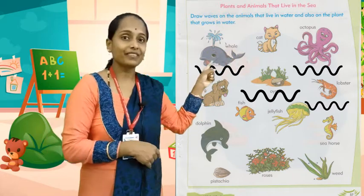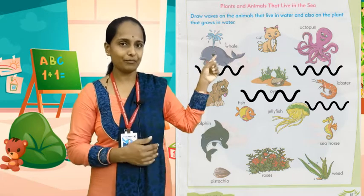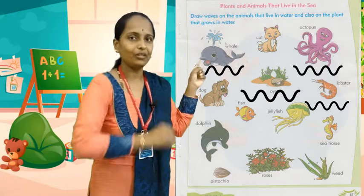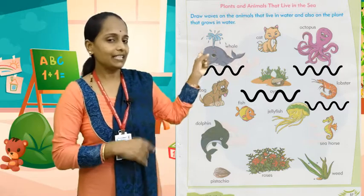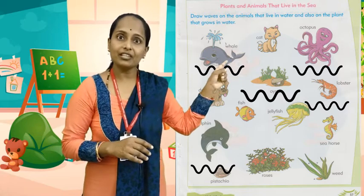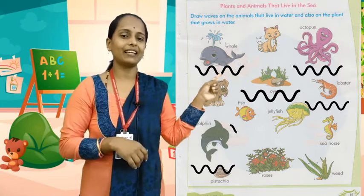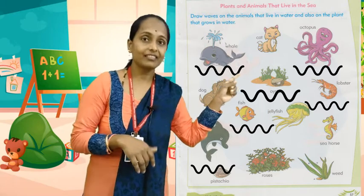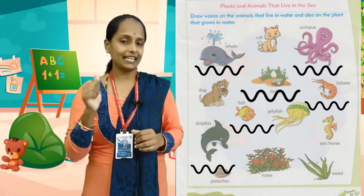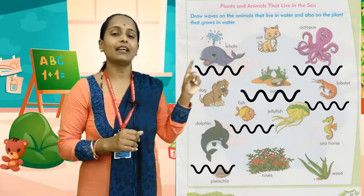Then — dolphin. Yes. You all have seen a dolphin, hai na bachyo? In the sea, from above, what does it do? It jumps, sai na bachyo. So under it, draw waves. Next — fish. Yes, fish also lives in the sea. Then — jellyfish. Jellyfish also lives in the sea. Yes. Then — seahorse. This also lives in the sea.